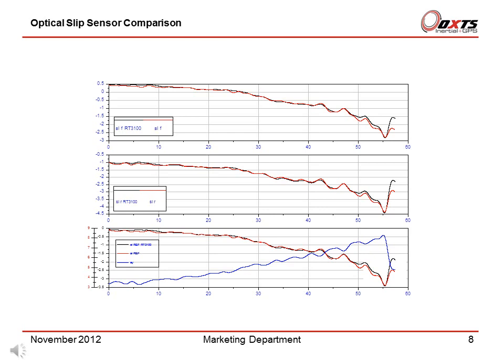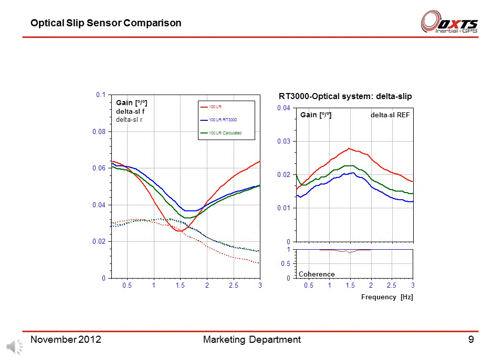In this data set, the vehicle is driven in a circle and the speed is increased until the vehicle skips. This example shows how the optical sensor and the RT measure the same quantity when there are no transient or dynamic effects. The top graph shows the slip angle at the front of the vehicle, and the bottom graph shows the slip angle at the rear and at the reference point — centre of gravity — and also shows lateral acceleration.